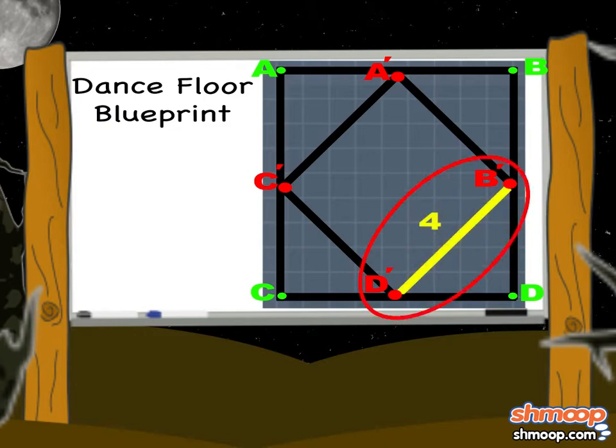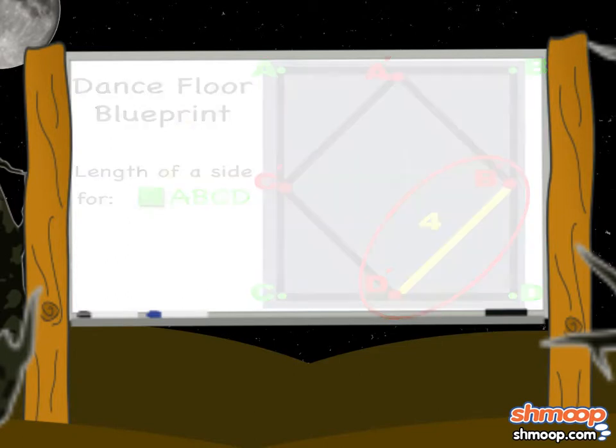Knowing the length B'D' is 4, what is the length of a side of the square A, B, C, D? Here are your choices.